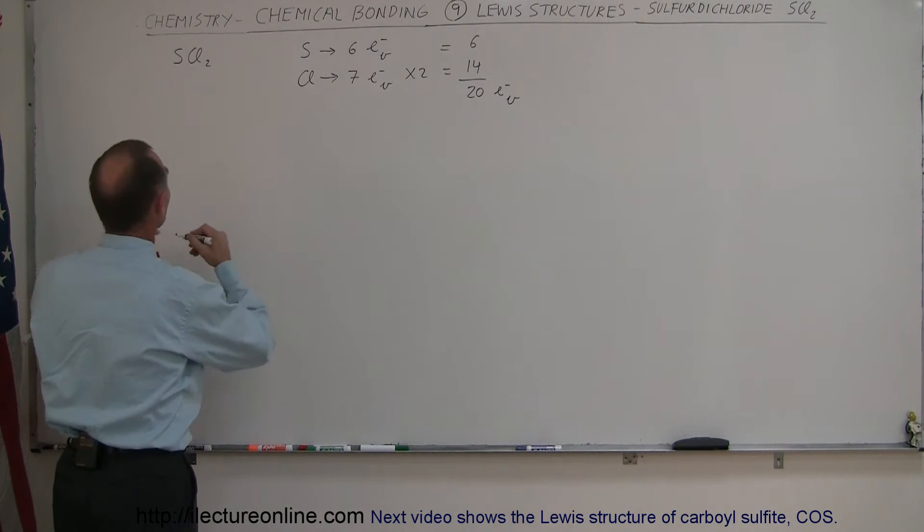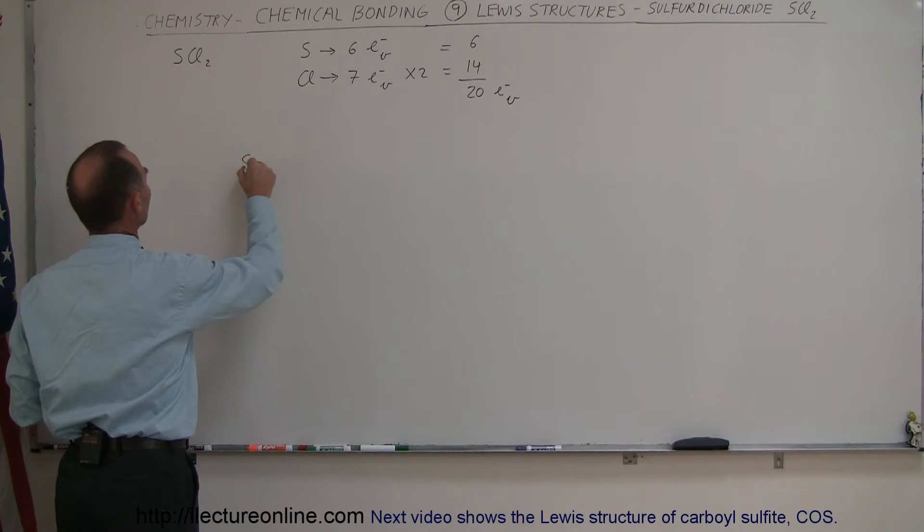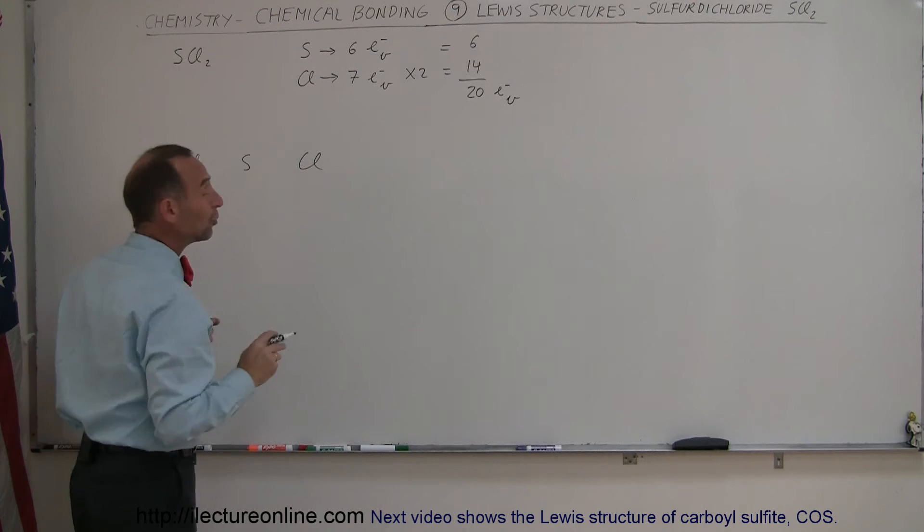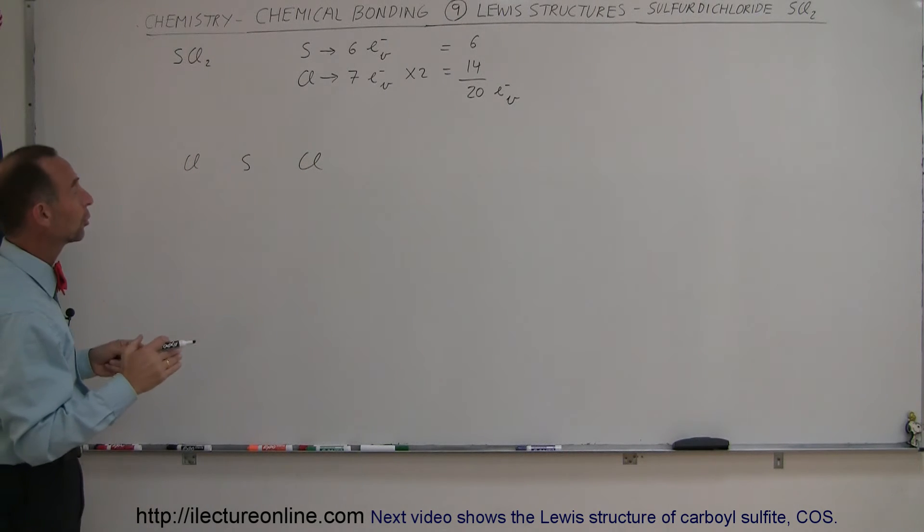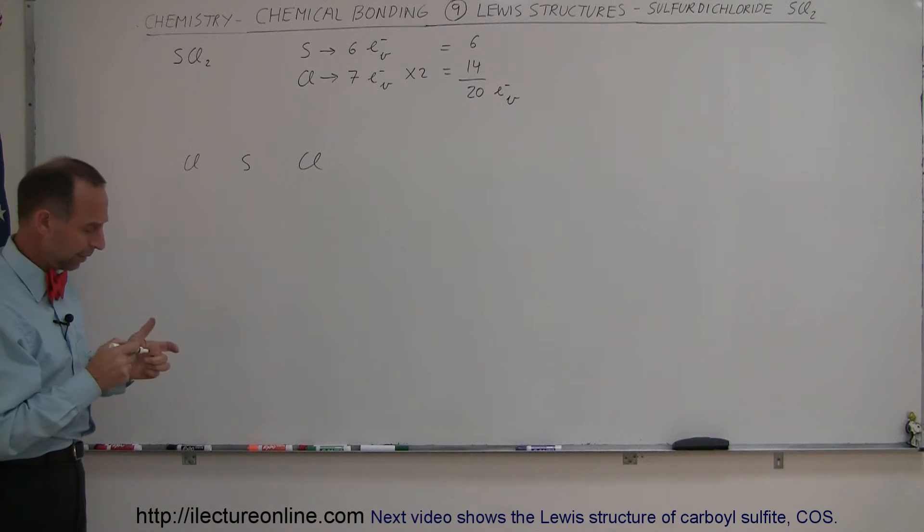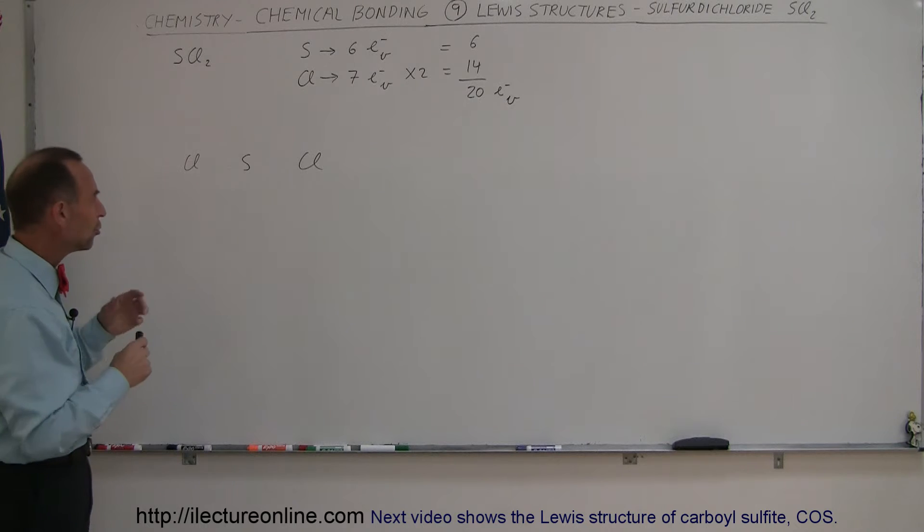We can expect that the molecule looks something like sulfur in the middle and chlorine perhaps on either side. We don't know yet if it's going to be a linear molecule or there's going to be something else going on there. We can usually detect that by looking at the symmetry once we're done.